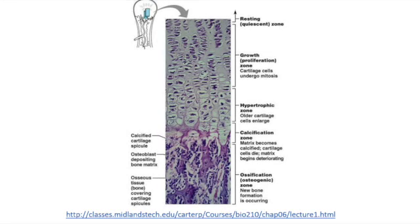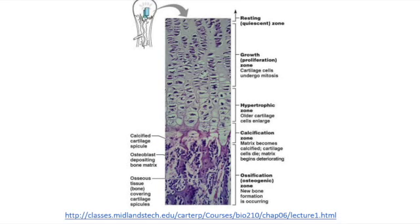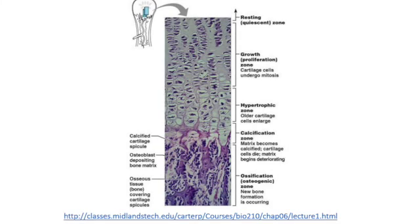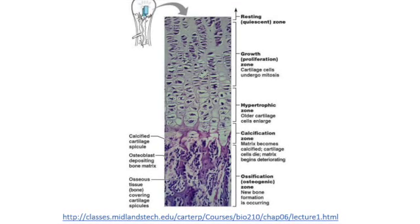The next zone is the zone of hypertrophy. Chondrocytes here aren't dividing, but they're beginning hypertrophy — the enlargement of these cells. You can tell that cells in the hypertrophic zone are a lot larger than the cells in the rest of the epiphyseal plate.